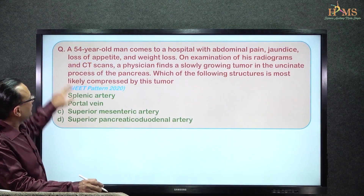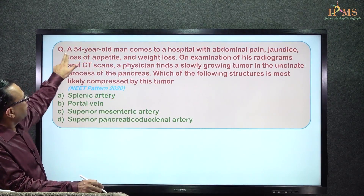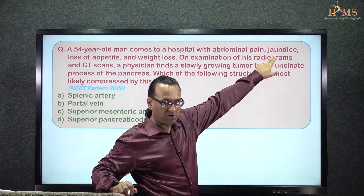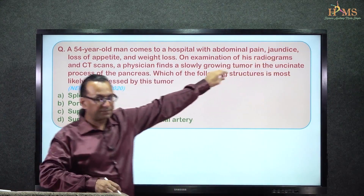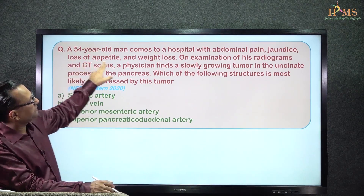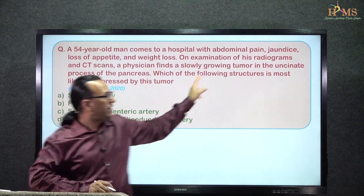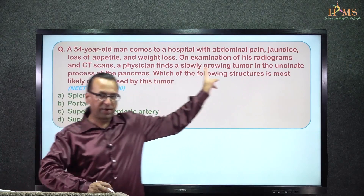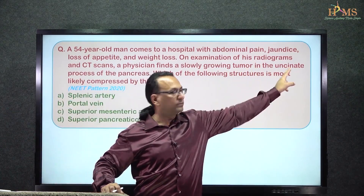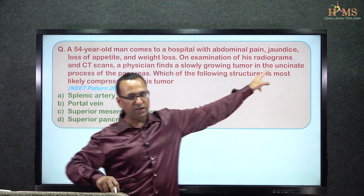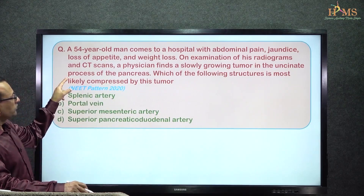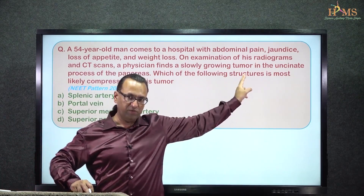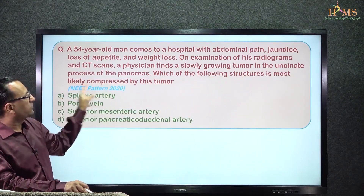A 54-year-old man presents with abdominal pain, jaundice, loss of appetite, and weight loss. His radiographs show a slowly growing tumor of the uncinate process of the pancreas. The question asks which structure is most likely compressed by this tumor.